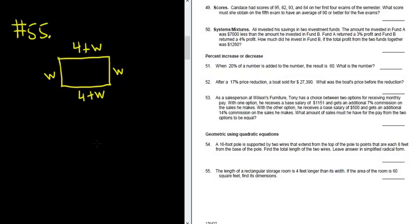Then it says the area of the room is 60 square feet. So that means that 4 plus W, that's the length, times the width is equal to 60. So we have to find W now. We can start by distributing the W. So we get 4W plus W squared, and that's equal to 60.